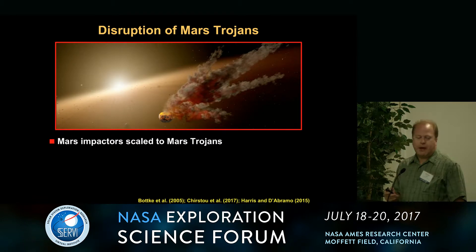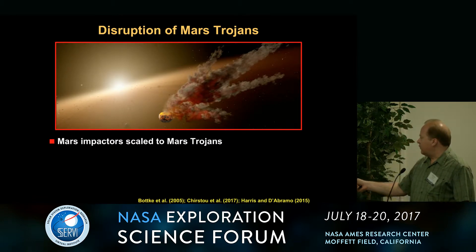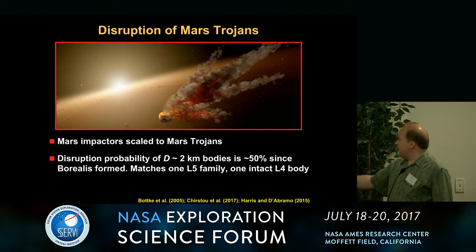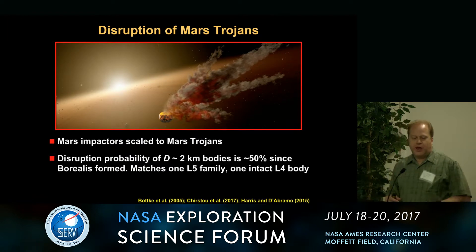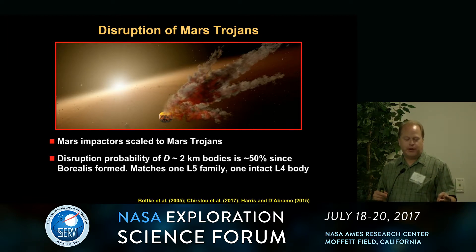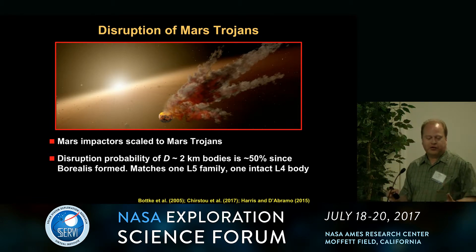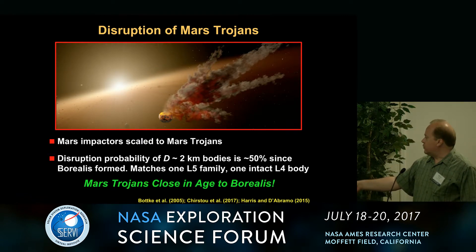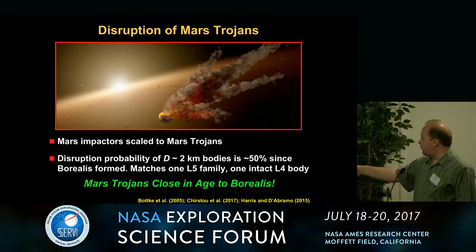So if you want Phobos and Deimos to be formed by the Borealis impact, that makes sense by this. We can play the same game with the Mars Trojans. The probability of disrupting a 2-kilometer body by the same population that's hitting Mars — the odds of that are about 50%. Right now, we have one object that's intact and one object that has a family. If you have a 50% disruption probability, that's about right — one lives and one dies. This is really statistics of small numbers, but these numbers easily could have been a factor of 10 or 100 either way and we don't see that, which suggests maybe there's something to it. At the very least, you might say that Mars Trojans are possibly close in age to Borealis as well.